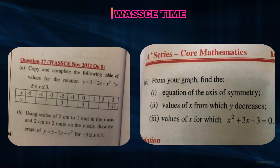Using scales of 2 centimeters to 1 unit on the x-axis and 2 centimeters to 2 units on the y-axis, draw the graph of y equals 3 minus 2x minus x squared for x greater than negative 5 and less than 3. From your graph, find: (i) the equation of the axis of symmetry, (ii) the values of x for which y decreases, and (iii) the values of x for which x squared plus 3x minus 3 equals zero.